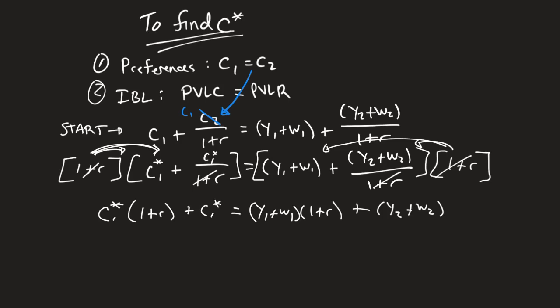We want to solve out for C1 star. What we're going to do is we are going to factor out C1 star here. So what are we left with? Well, we're left with a 1 plus R from this factor. So if I pull the C1 out, I'm left with 1 plus R. If I pull the C1 out of the second one, I'm left with just 1.